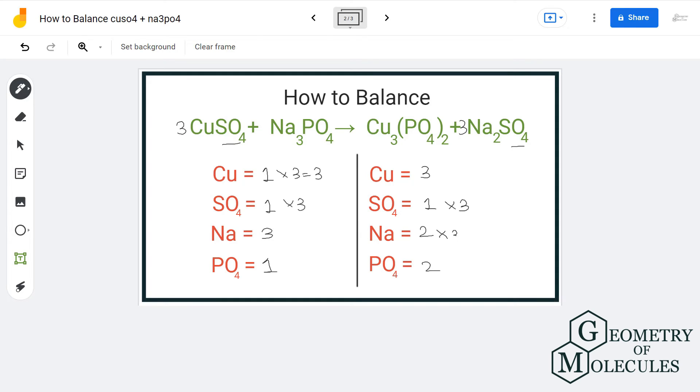Now this gives us 6 sodium on the product side while on the reactant side we only have 3, so we will multiply it by 2. This in turn gives us 2 phosphate ions on the reactant side and we already have 2 phosphate ions on the product side.